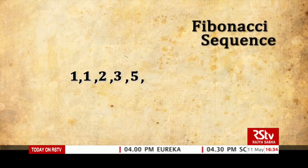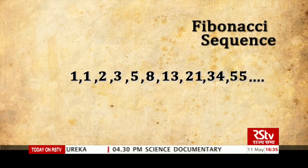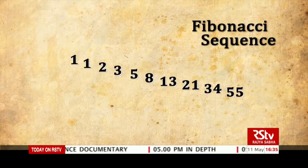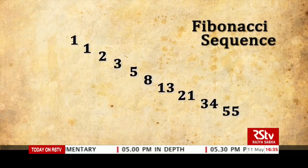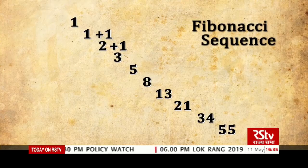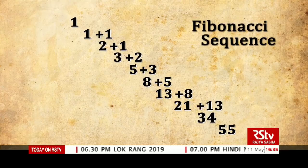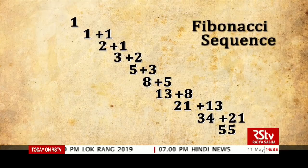Let's look at the sequence in a little more detail. If we list out the numbers, there is a pattern — each number is the sum of the earlier two. 1 plus 1 is 2, 2 plus 1 is 3, 3 plus 2 is 5, 5 plus 3 is 8, and so on. This string of numbers is known as Fibonacci's sequence, after the man who wrote about it.